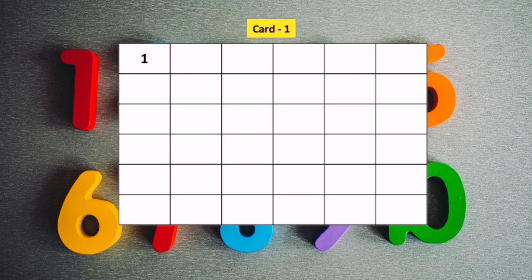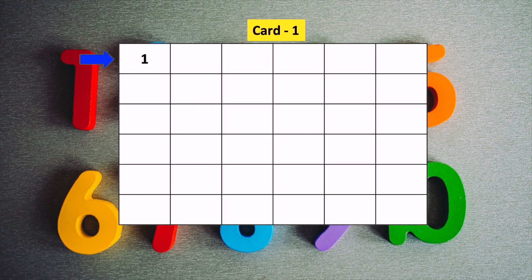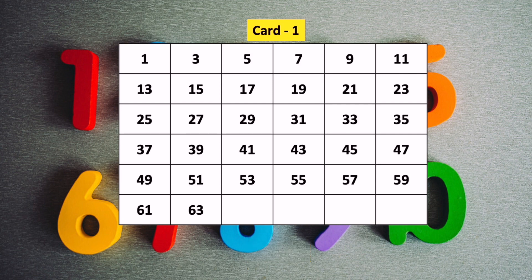For the first card, we will start from number 1 in the first box. Then we skip number 2 and enter number 3 in the next box. Then we will skip number 4 and enter number 5 in the next box. So we enter one number and skip the next one. We continue this till number 63.